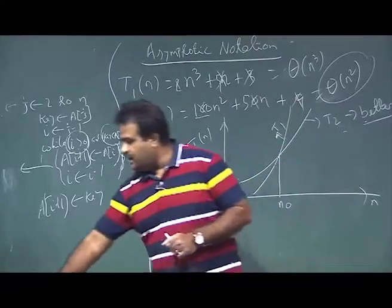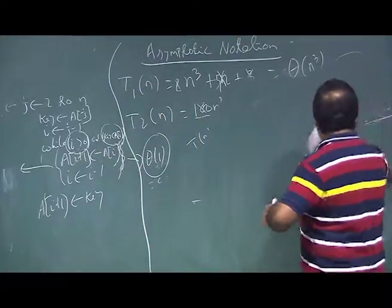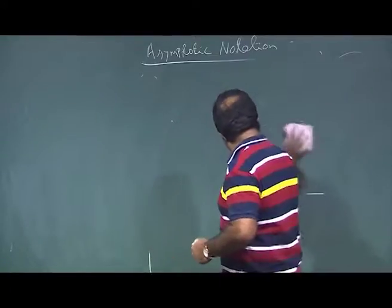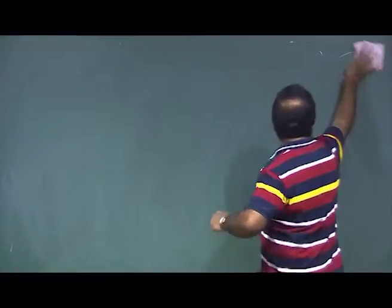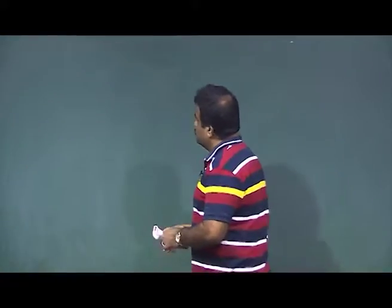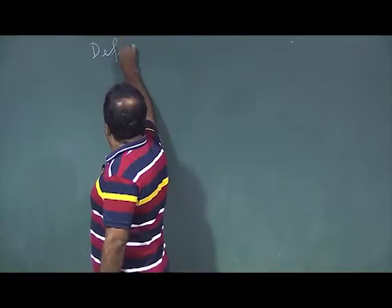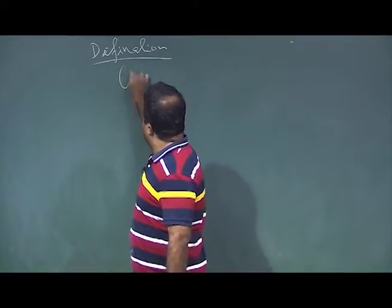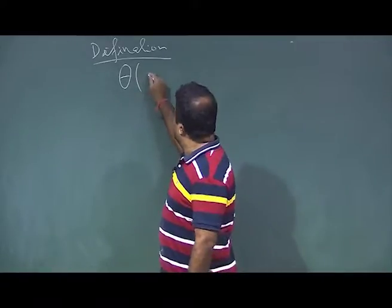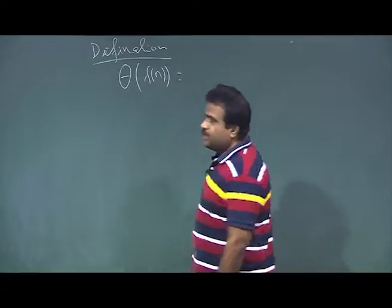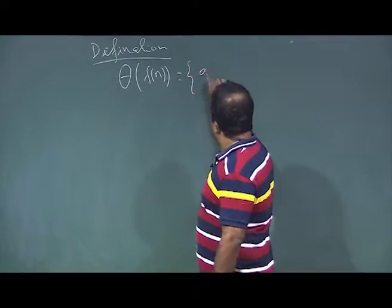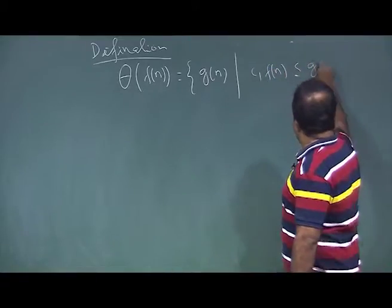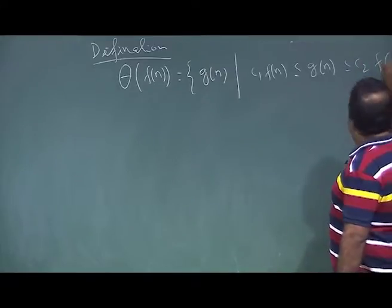We formally define three asymptotic notations: big theta, big O, and big omega. The definition of big theta of f(n) is the set of all functions g(n) such that there exist two positive constants c₁ and c₂ with c₁·f(n) ≤ g(n) ≤ c₂·f(n) for all n greater than some n₀.